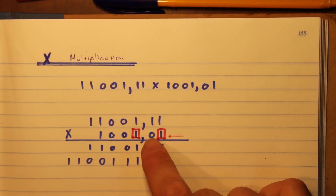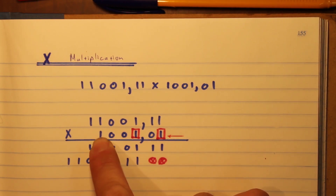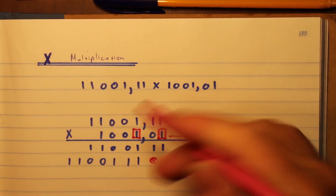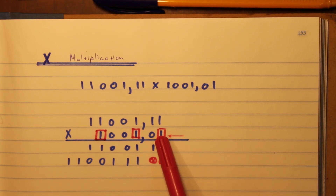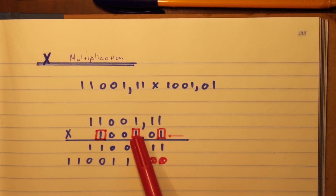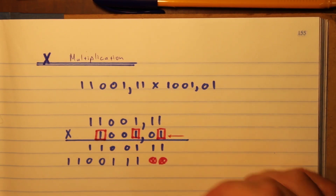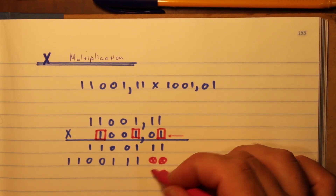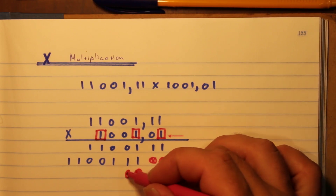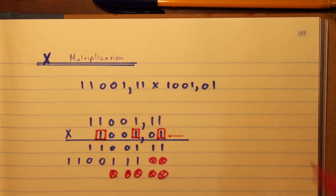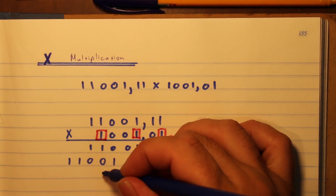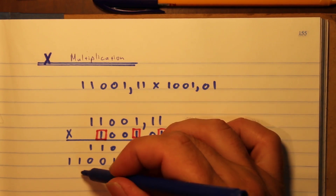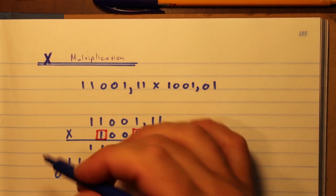I keep going and find the next one — there it is at the end of the number. How many positions do I skip now? It's one, two, three, four, five positions. So I write one times the top number again — that's one one one, two zeros, and two more ones — shifted five positions.